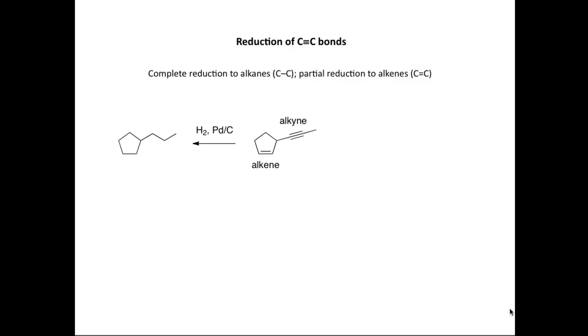We've got a starting material here, which contains both the C-C double bond of an alkene and the C-C triple bond of an alkyne. And if we react that with hydrogen and a catalyst, palladium on carbon, we can reduce both the double bond and the triple bond under these hydrogenolysis conditions to form this saturated system here.